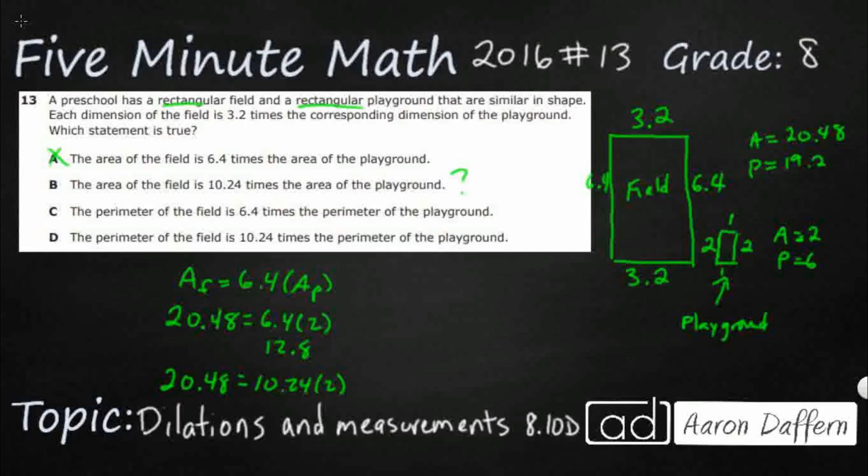The perimeter of the field is 6.4 times greater. So that's 19.2 equals 6.4 times the perimeter of the playground 6. No. The perimeter of the field is 10.2. No. If that 6, this is too large. That 10.2 is going to be way too large. No.